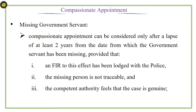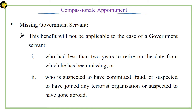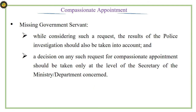In the case of a missing government servant, compassionate appointment can be considered only after a lapse of at least two years from the date from which the government servant has been missing, provided that an FIR to this effect has been lodged with the police. The missing person should not be traceable and the competent authority must feel the case is genuine. This benefit will not be applicable if the government servant had less than two years to retire on the date from which he has been missing, or is suspected to have committed fraud, joined a terrorist organization, or gone abroad.